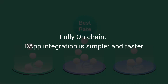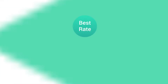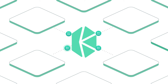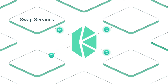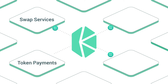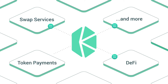Being fully on-chain also means integration is simpler and faster. Using Kyber, developers can easily build innovative applications, including instant token swap services, token payments, and decentralized financial use cases.